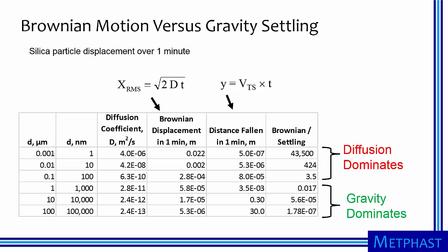To get a better feeling for how particle size dictates what forces are important, let's compare how far a silica particle moves in one minute due to Brownian motion and gravity settling. I show particle diameter in micrometers and nanometers in the first two columns. Then I provide displacement in one minute due to Brownian motion in column three, and that due to gravity settling in column four.